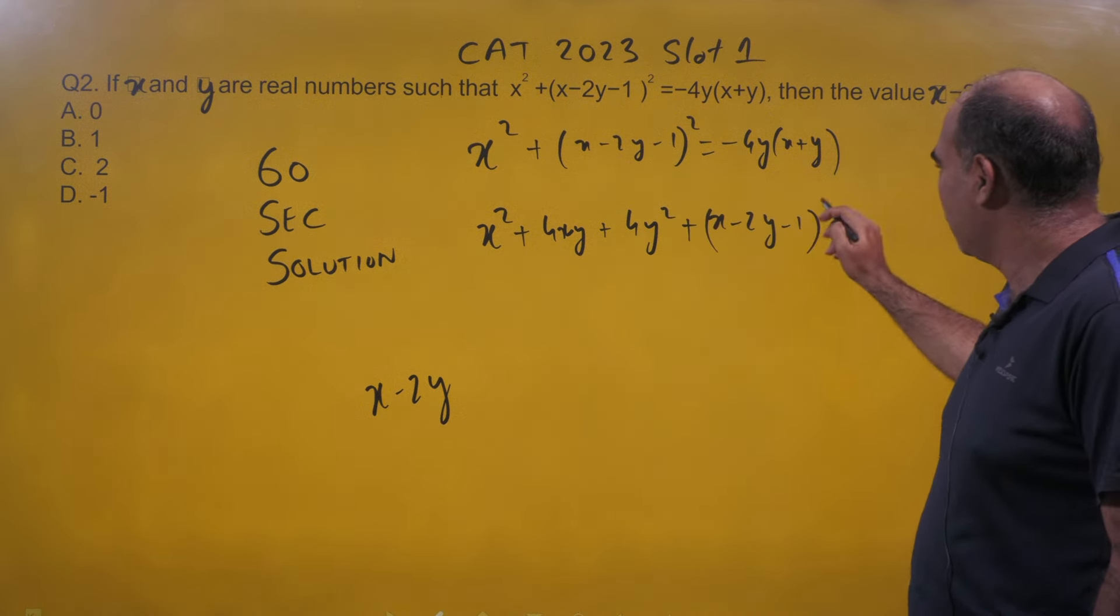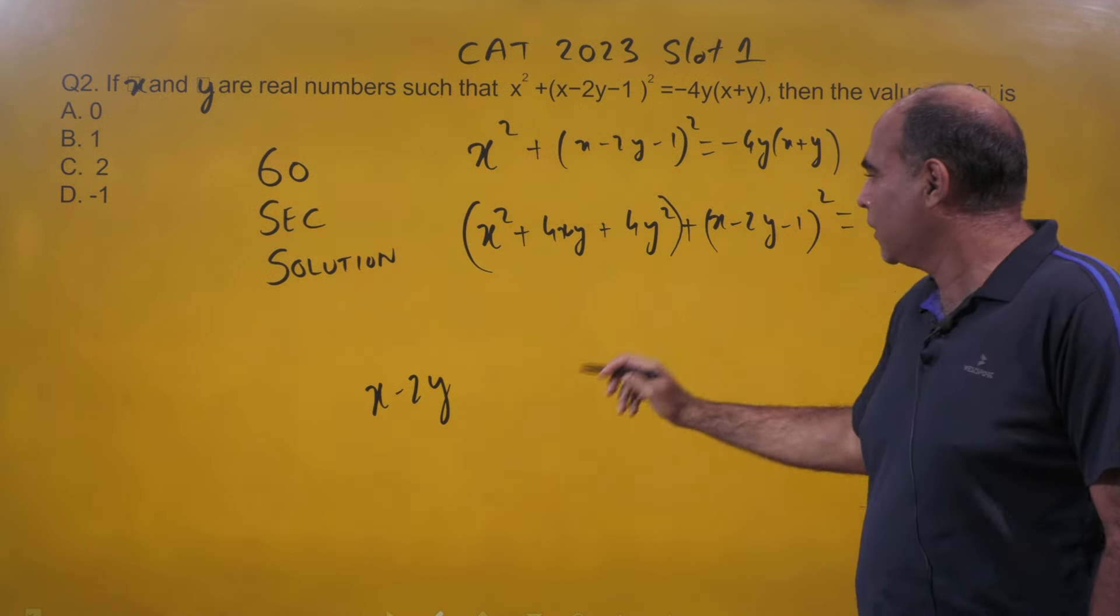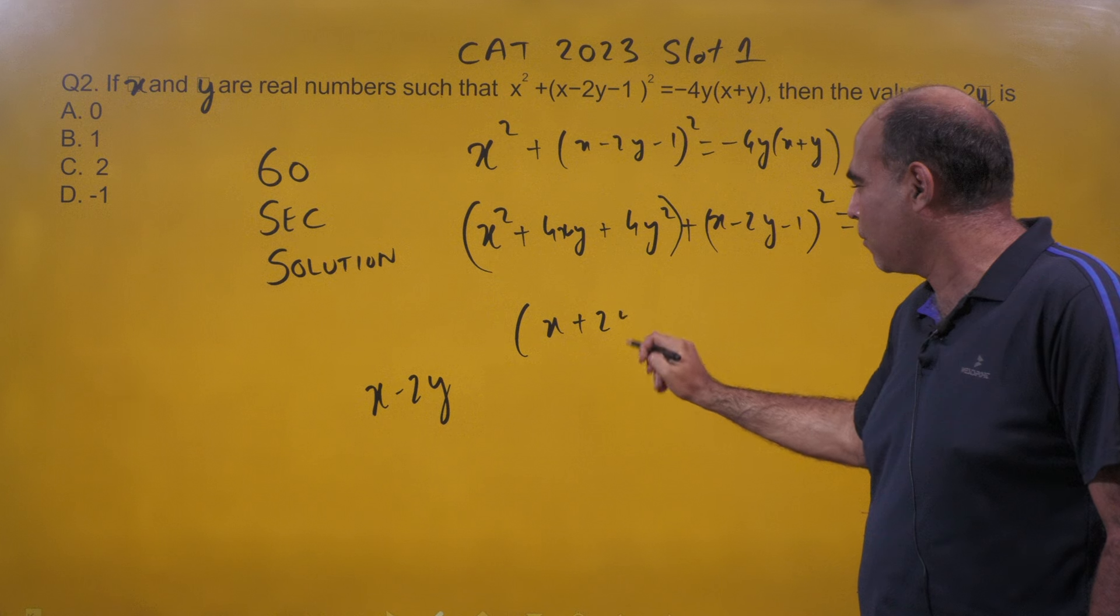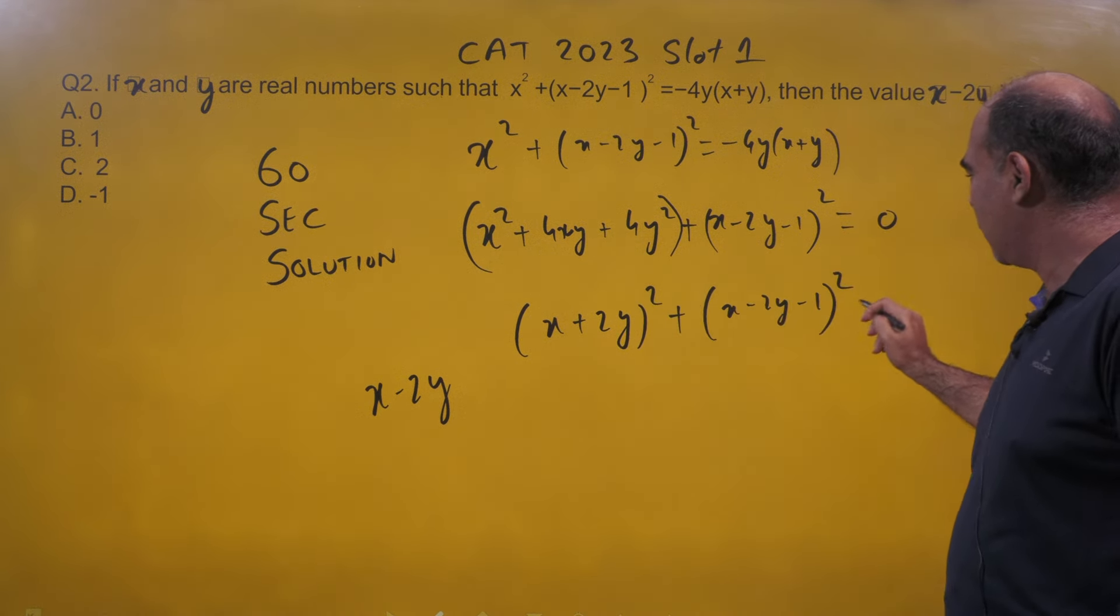The solution is here. This is a perfect square: (x + 2y)² + (x - 2y - 1)² equals 0.